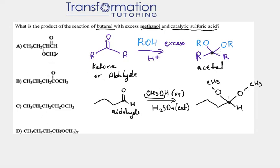Looking at the answer choices: choice A has a double bond O — incorrect, we no longer have a double bond O. Choice B also has a double bond O — also incorrect. Choice C has only one OCH₃ group, but we need two OCH₃ groups — incorrect. Therefore choice D, which has four carbons and two OCH₃ groups, is the correct answer.